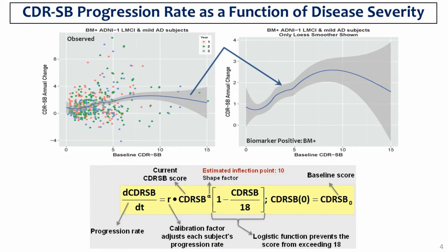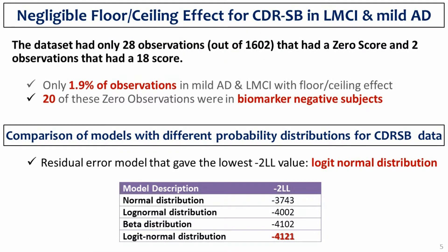The model predicts that the progression rate approaches zero as the scores approach the boundaries of the scale. Within the range of the scale, the progression rate is proportional to the current CDRSB score through a parameter that adjusts each subject's progression rate. An advantage of CDRSB is that less than 2% of the observations reside on the boundaries of the scale for this population, and most of the zero-boundary observations were present in subjects that were biomarker negative.